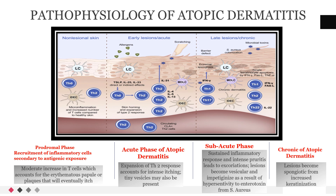The acute phase of atopic dermatitis involves the expansion of T cell response, accounting for intense itching. Tiny vesicles may also be present. The subacute phase involves a sustained inflammatory response and intense pruritus leading to excoriations. Lesions become vesicular and impetiginized as a result of hypersensitivity to enterotoxins from S. aureus.